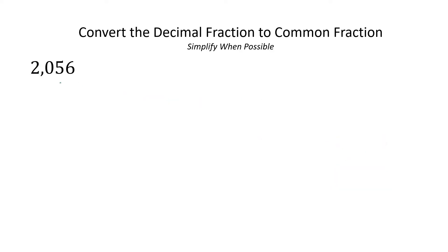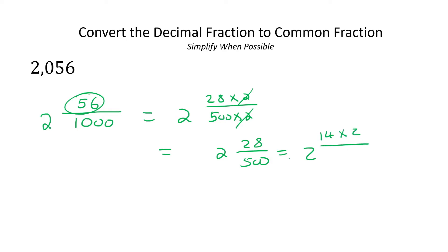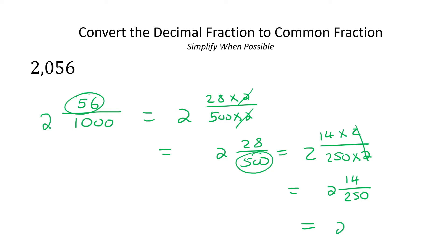Okay, with this one ignore the two — just write it over there. There's one, two, three decimals, so that'll be a thousand. So you say two and then take 56 and write it over 1000. Then simplify: 56 is 28 multiplied by two, and 1000 is 500 multiplied by two, so the twos cancel. That can still simplify: 28 is 14 multiplied by two, and 500 is 250 multiplied by two — cancel again. Then 14 is seven times two, and 250 is 125 times two — cancel those. So we're left with two and seven over 125 as your final answer.